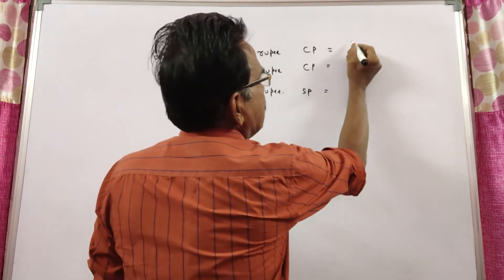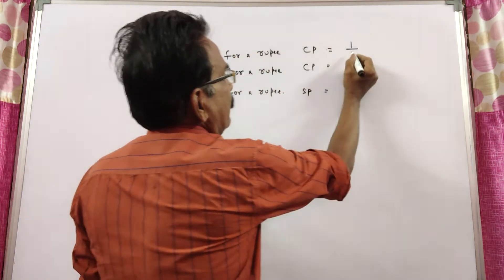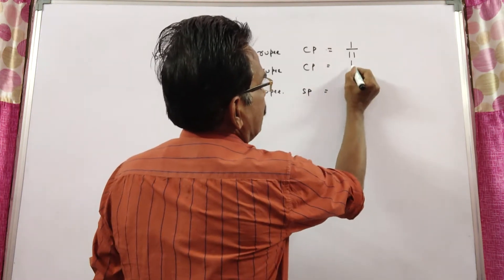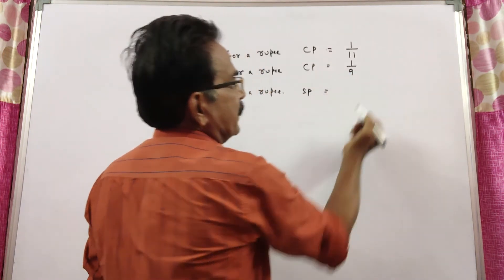See friends, 11 for a rupee means cost price of each orange is 1 by 11. Here the cost price of each orange is 1 by 9.